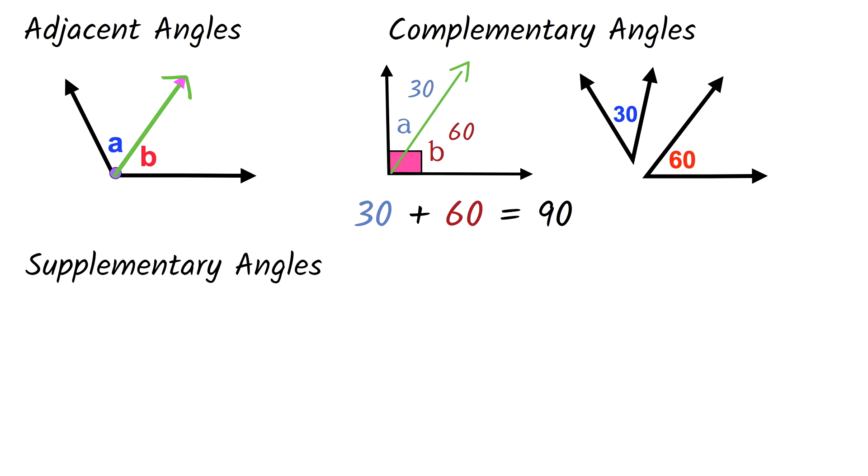Linear pair or supplementary angles are angles that add up to 180 degrees. Here we know that a straight angle is 180 degrees. So if we divide this into angle A and angle B, then angle A plus angle B will be equal to 180 degrees. So angle A and angle B are supplementary. Let's say angle A is 60 degrees. Then angle B will be 120 degrees. 60 plus 120 equals 180.